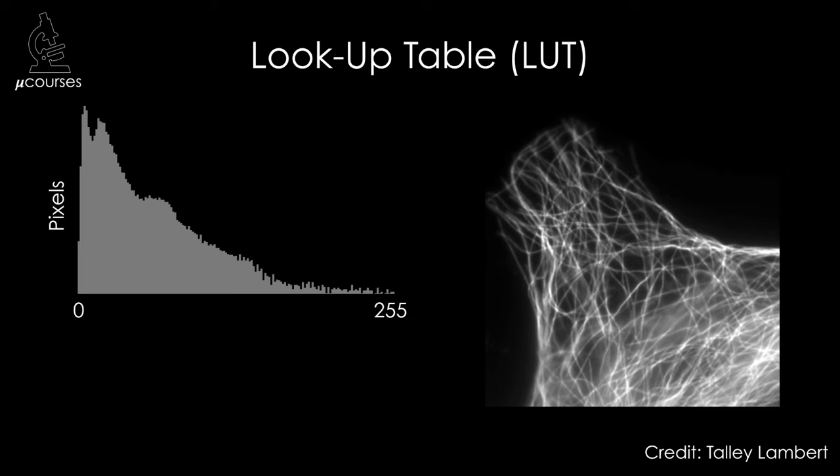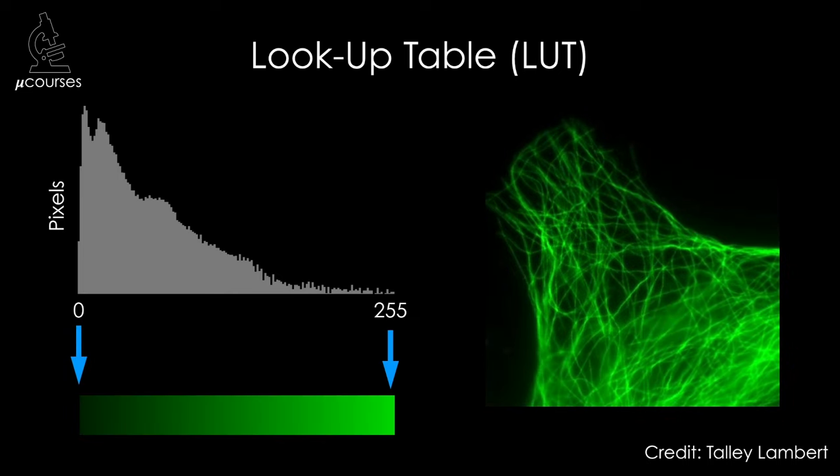Pseudocolor lookup tables are a very simple conversion. So for example, make the highest intensity values in the image green, the lowest intensity values in the image black, and all the values in between a mix of the two. This would give us a green image.